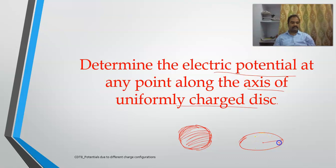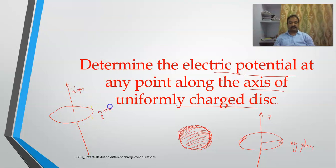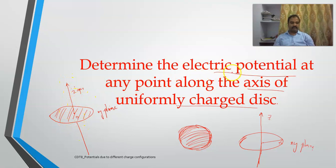Assume the disc has radius r and lies in the x-y plane. The axis of the disc is along the z-axis, passing through the center. We want to determine the potential at point P, which is at a distance h along the axis from the disc.